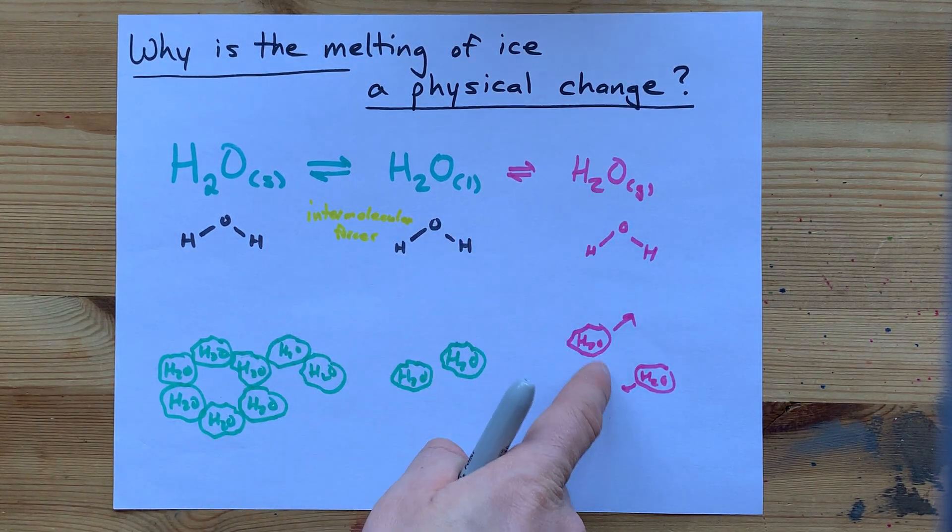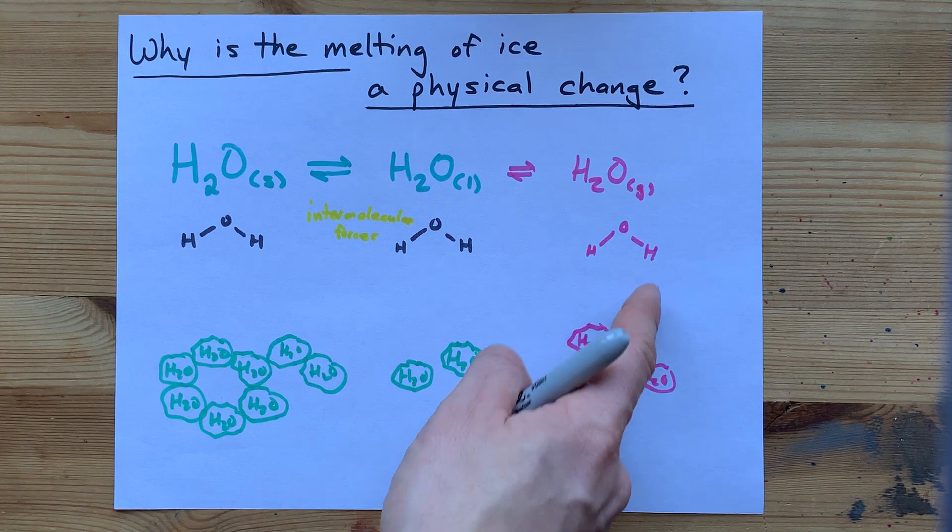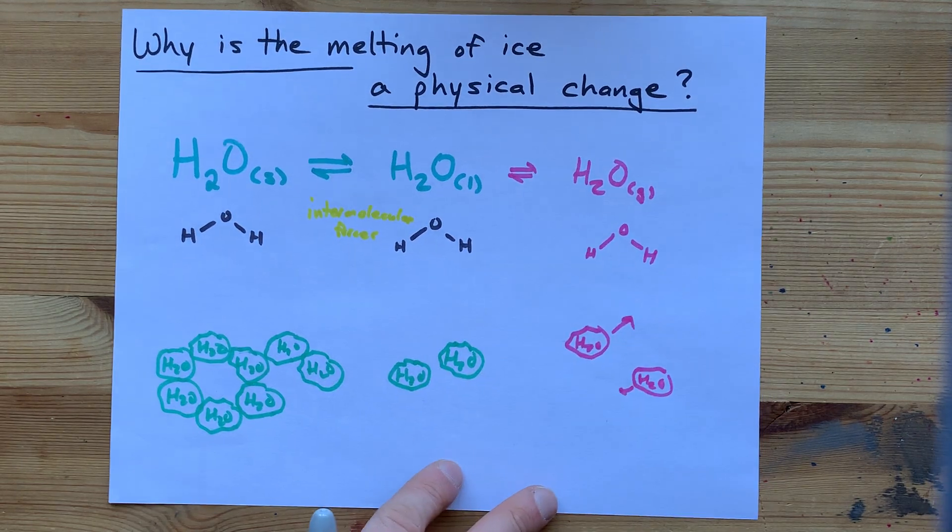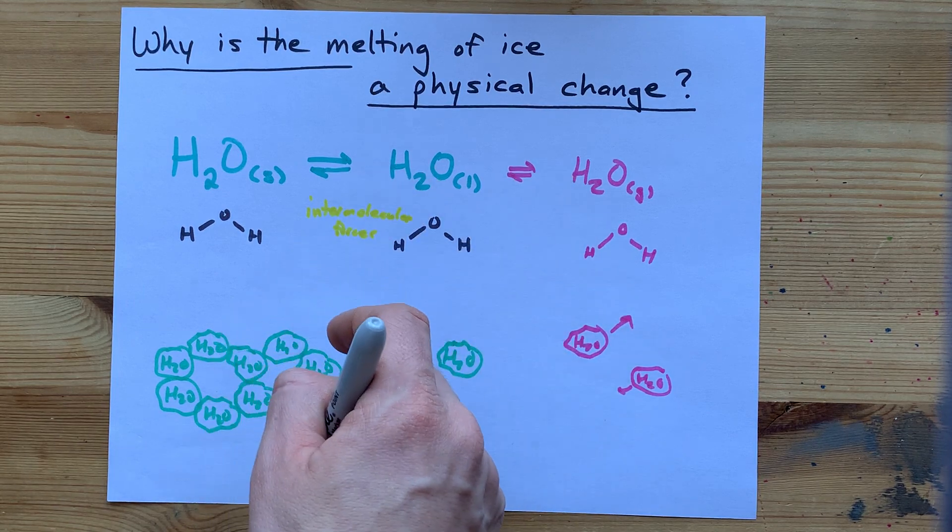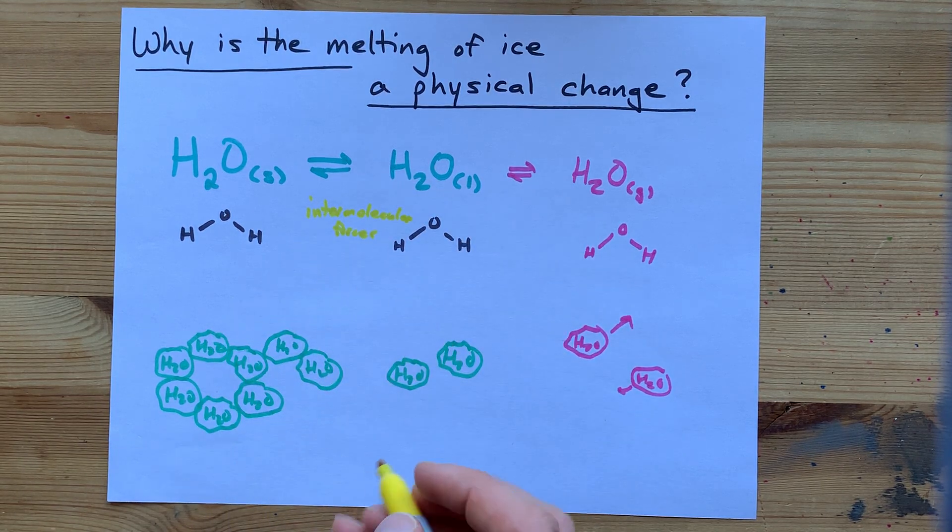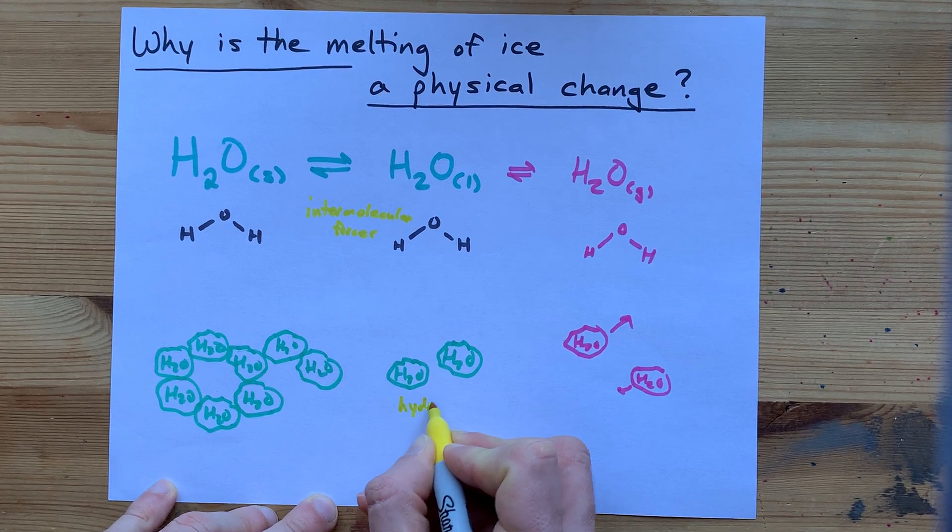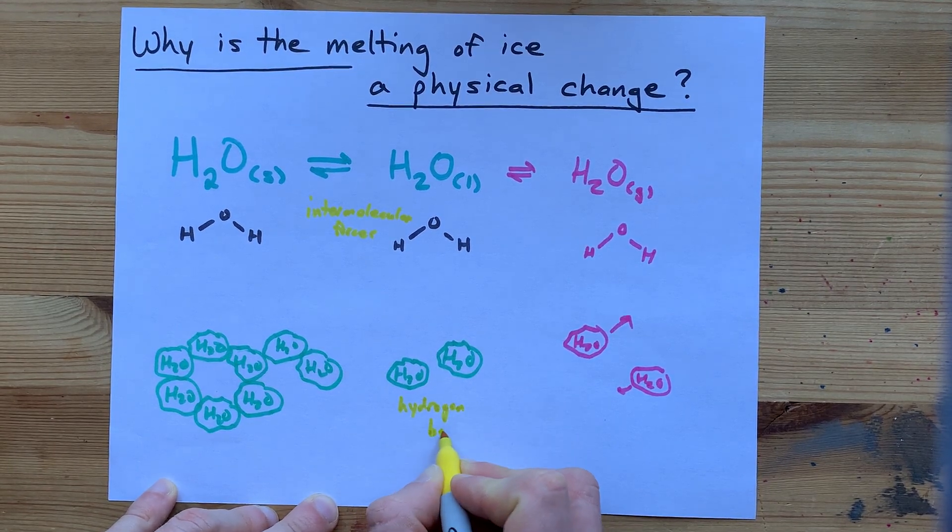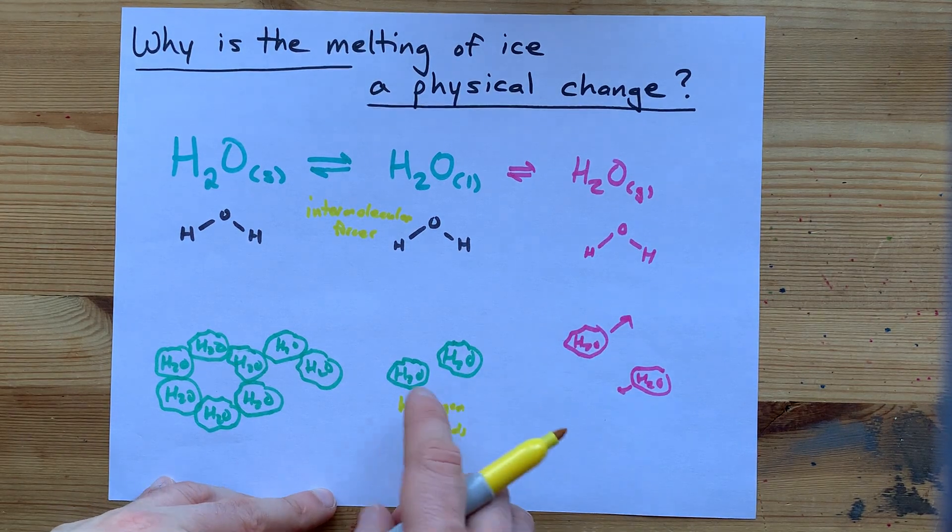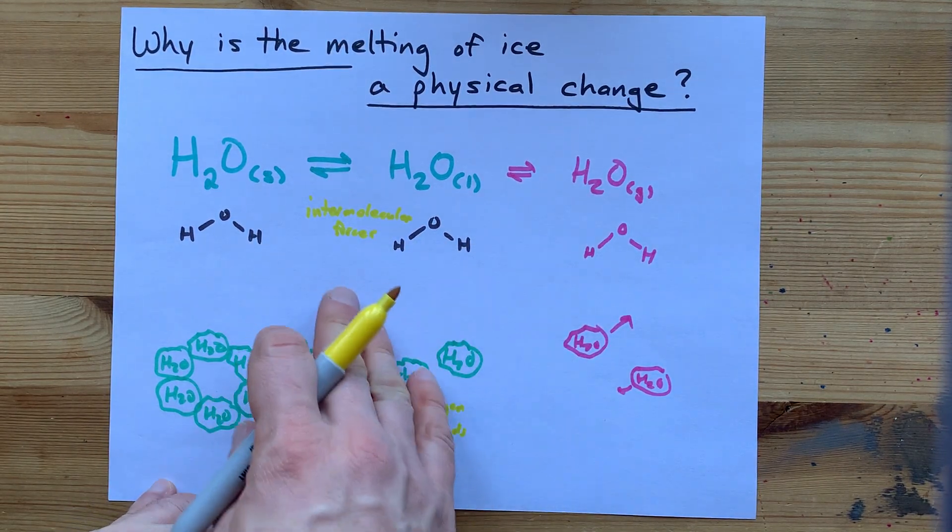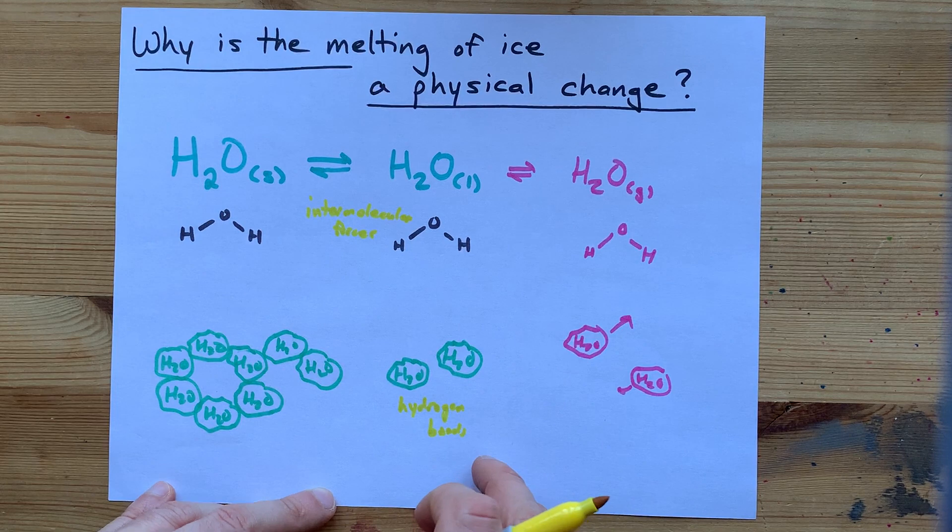In gas phase water, the molecules are moving around too quickly to ever be attracted. But by the time you get below 100 degrees Celsius, the hydrogen bonds, which are temporary attractions between the H of one molecule and the O of another molecule,